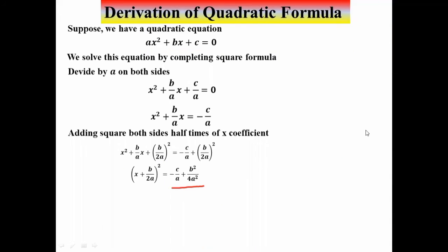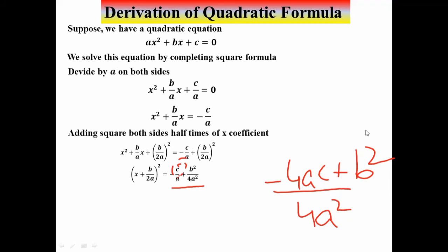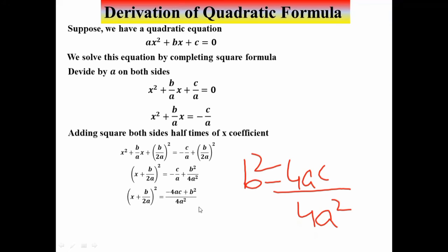To simplify the right side, I take the LCM. After taking the LCM, the right side becomes (-4ac + b²) / 4a², which we can also write as (b² - 4ac) / 4a². Now we take the square root of both sides.